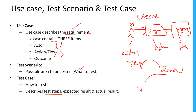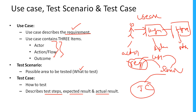So use case describes the requirement. Based on the requirement we will write test scenarios, and for each scenario we can write our test cases. This is the relation: first start with the requirement described by the use case, then based on the use case create test scenarios, and for those testing areas write the test cases. Use case describes requirement, test scenario describes what to test, and test case describes how to test in detailed steps.